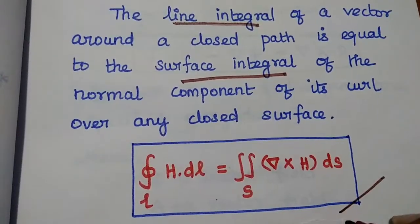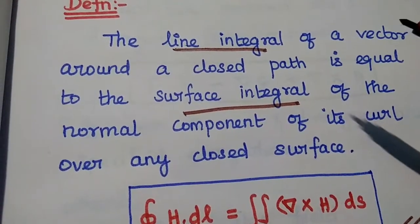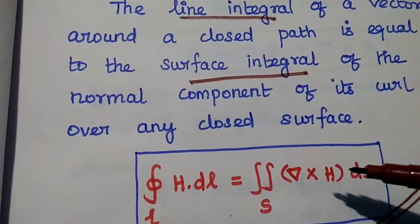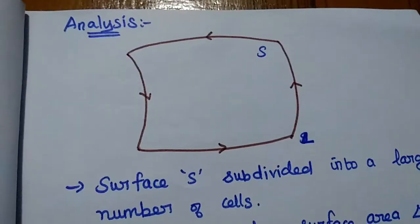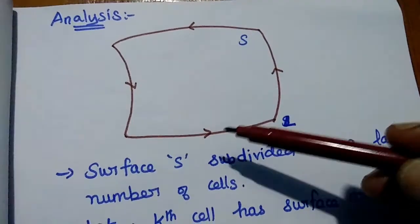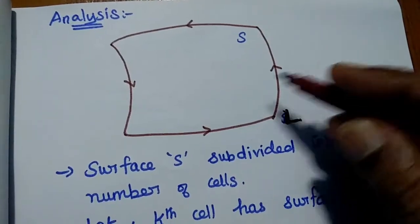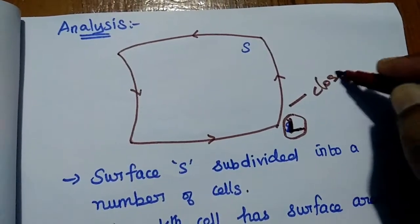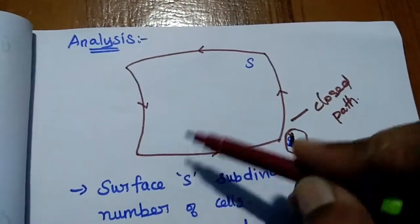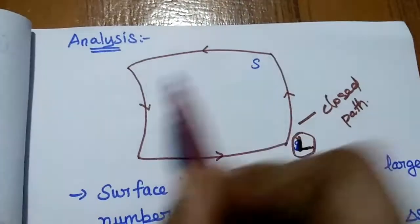Now we are going to prove this statement — how we can relate that line integral of a vector around a closed path to the surface integral of its curl. In order to prove Stokes theorem, first we are going to consider a closed loop. This is a closed path with the overall length L, and a closed path can create an open surface.